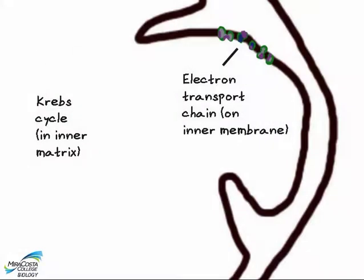The Krebs cycle works together with another set of proteins called the electron transport chain, and these are in the inner membrane of the mitochondrion.